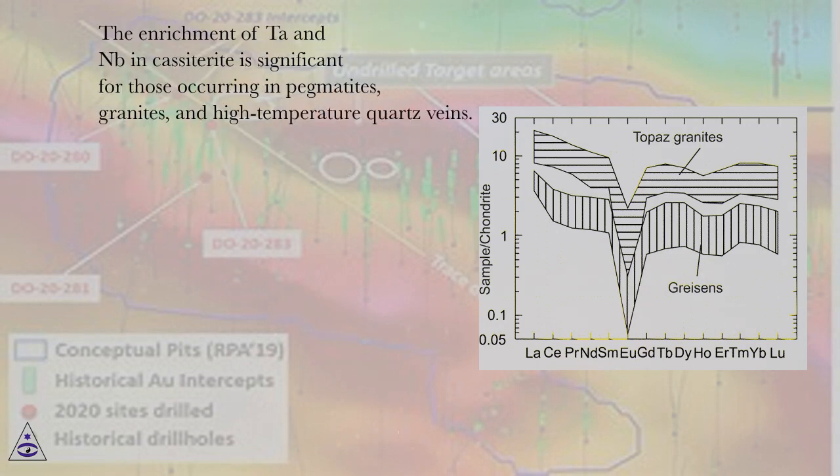The enrichment of Ta and Nb in cassiterite is significant for those occurring in pegmatites, granites, and high-temperature quartz veins.